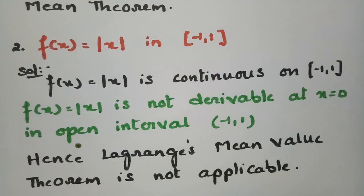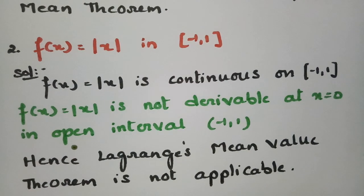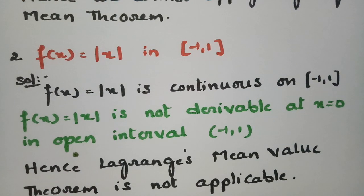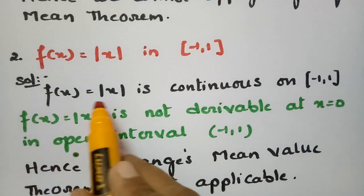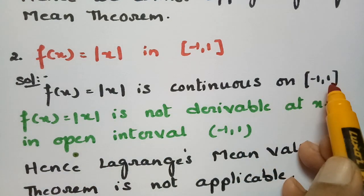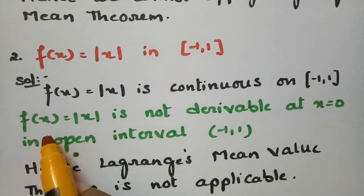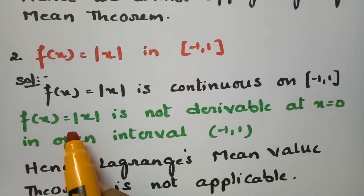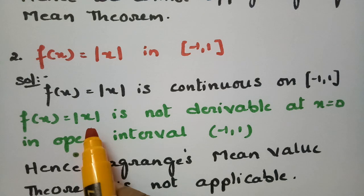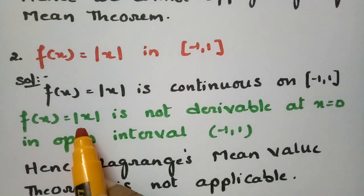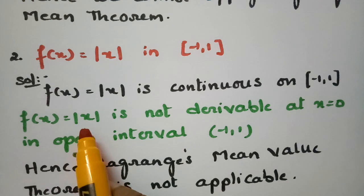The second problem where Lagrange's mean value theorem is not applicable: f(x) = |x| on the closed interval [-1, 1]. f(x) = |x| is continuous on [-1, 1]. Computing the left-hand derivative gives -x, and the right-hand derivative gives +x. The right-hand derivative does not equal the left-hand derivative.